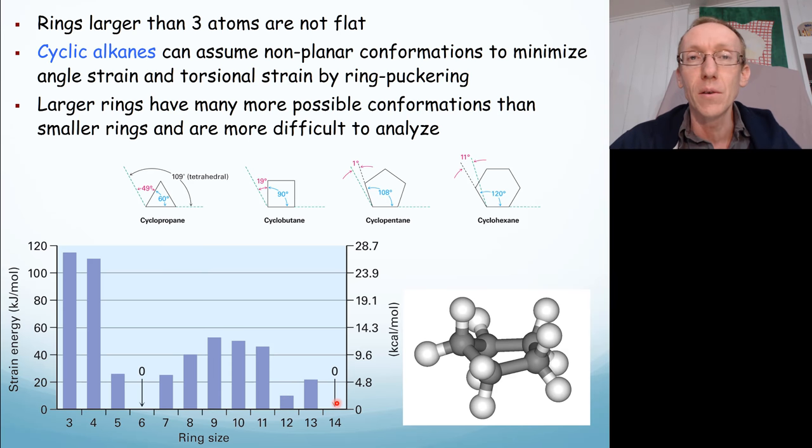And then fourteen and bigger, really, those large ring systems, they have so many possible arrangements of those atoms that they can find a way to have fairly ideal or close to ideal bond angles and not much ring strain.